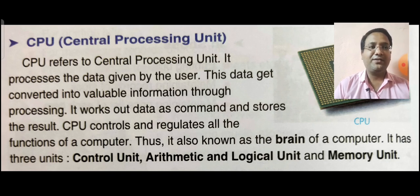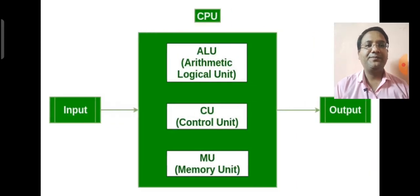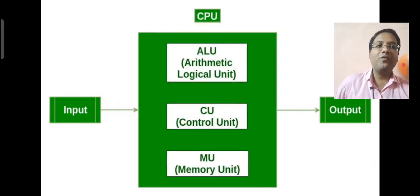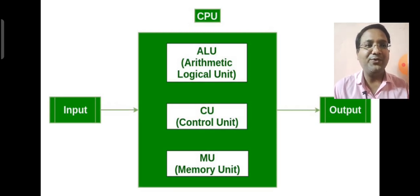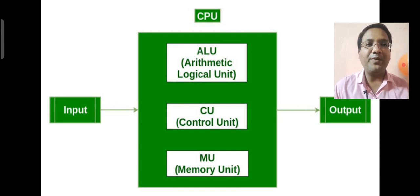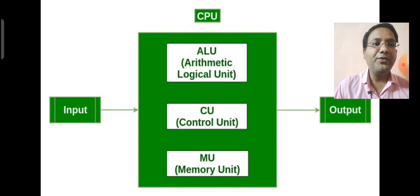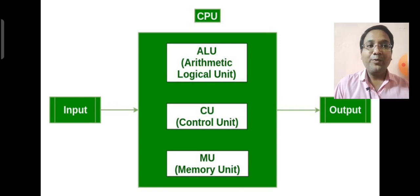It has three units. Control unit, arithmetic and logic unit and memory unit. Here, you can see the block diagram of computer. How computer works? Computer takes input from the keyboard and mouse. Who will process it? CPU. CPU consists of three parts. ALU, arithmetic logical unit. CU, control unit. MU, memory unit.